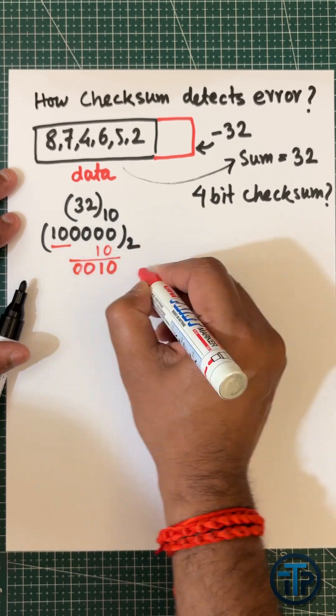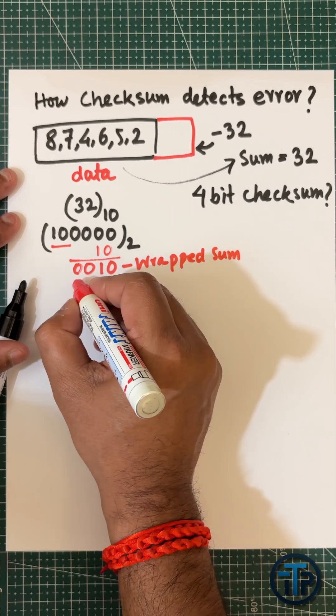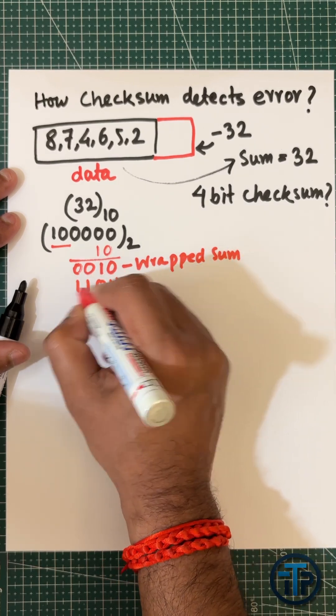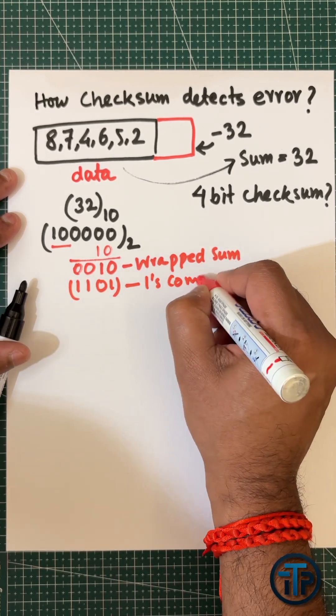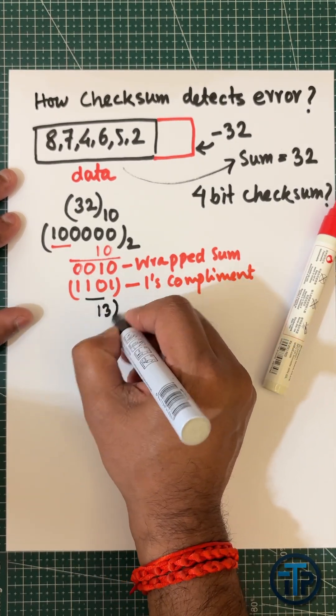The wrapped sum is 0010, and the one's complement is 1101, which in decimal format is 13. Now let's take two different cases.